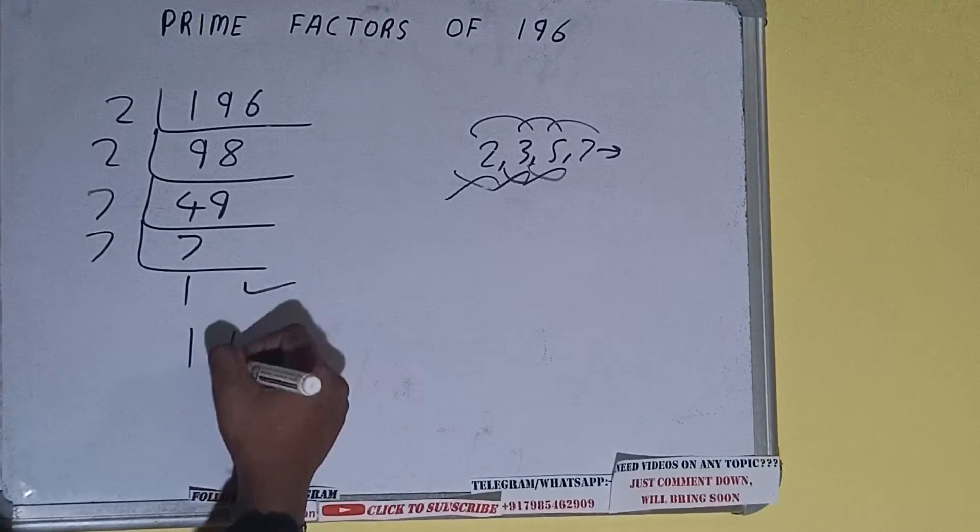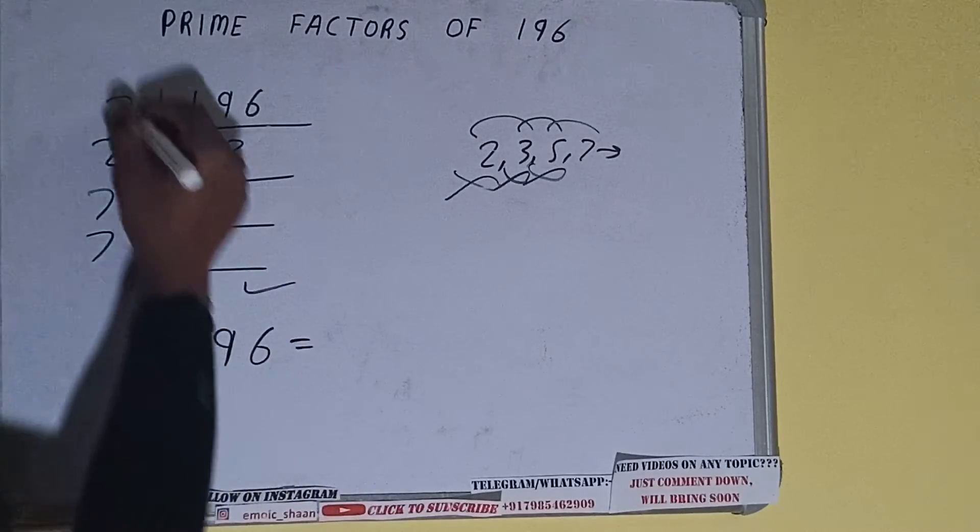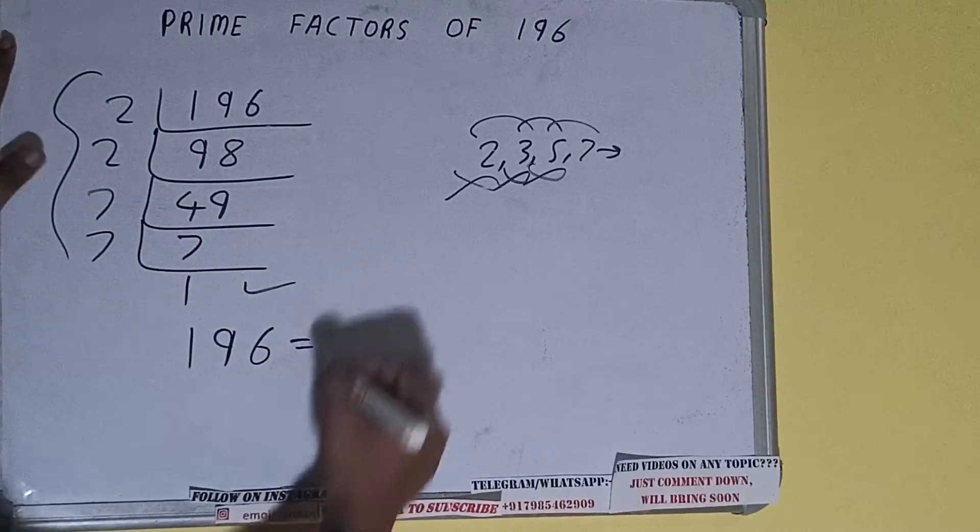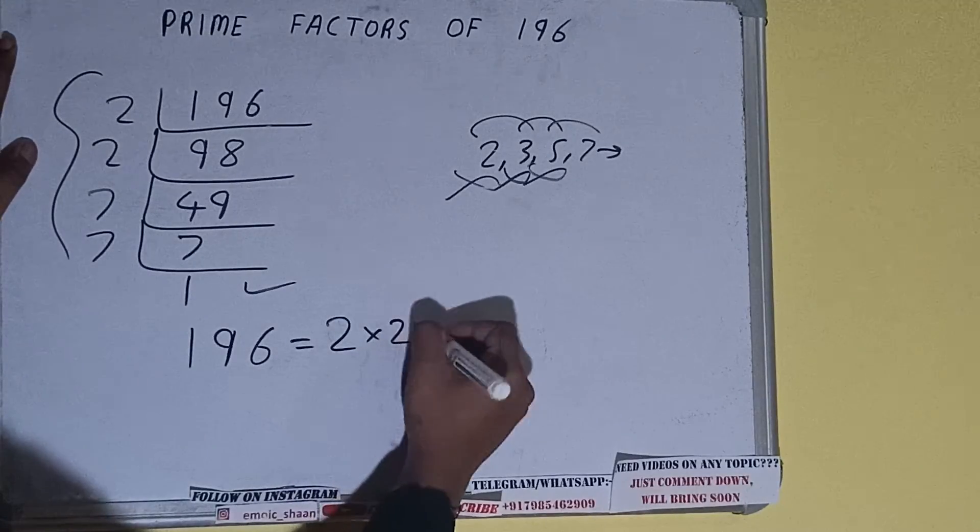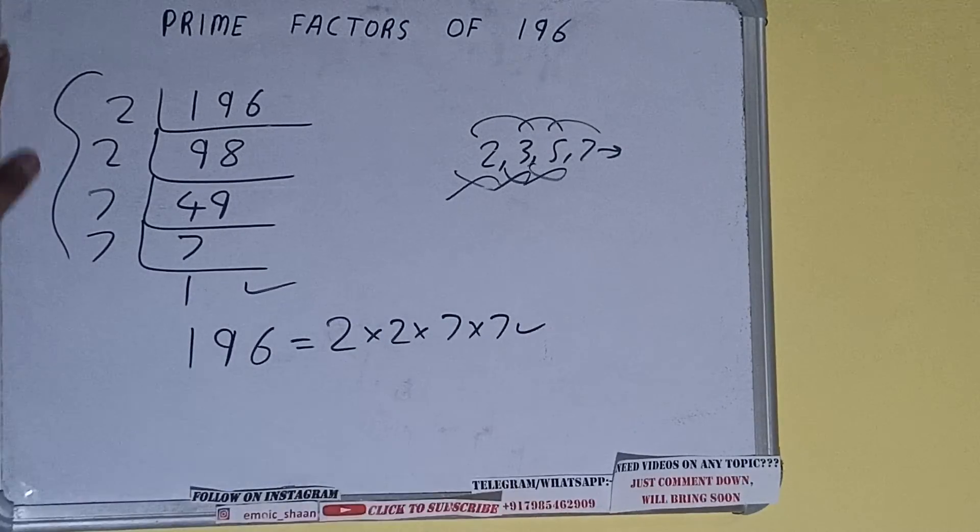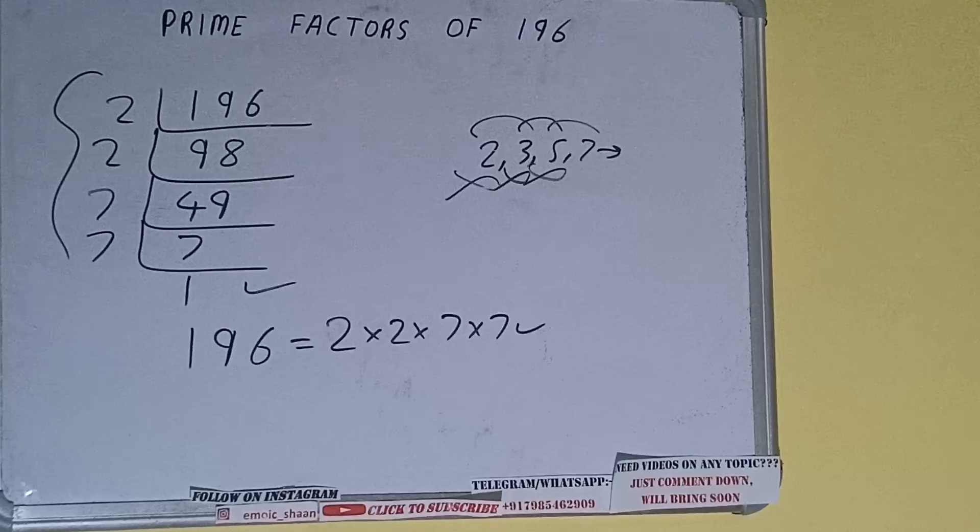And do one last thing: that is, prime factor of 196 equals to multiply whatever we have on the left-hand side, that is 2 × 2 × 7 × 7. That will be the answer. So this is all about prime factors of 196.